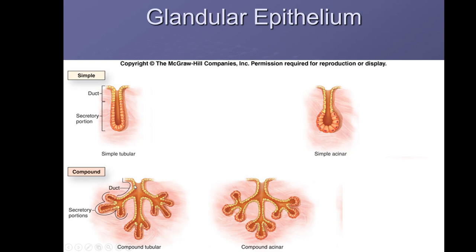Looking at the pictures: both of these have one duct with no branching — they are simple. Both of these have ducts that branch — they are compound. The secretory portion that looks like a tube is tubular, so you have simple tubular and compound tubular. The more rounded secretory portions are acinar, giving simple acinar and compound acinar.